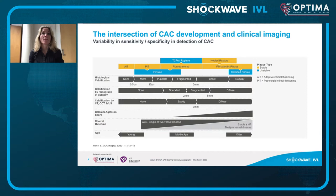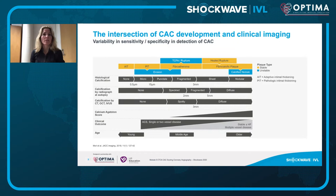Coronary calcium develops over a very long period, starting with intimal thickening and the development of fibroatheromas, and further into fibrocalcific plaques. There is a threshold when we can detect it, and only as calcification develops will we be able to detect it in clinical imaging. With age, as the calcification process develops from micro-fragments into sheets and nodules, coronary plaque often goes from unstable single-vessel disease to a more stable multivessel disease.